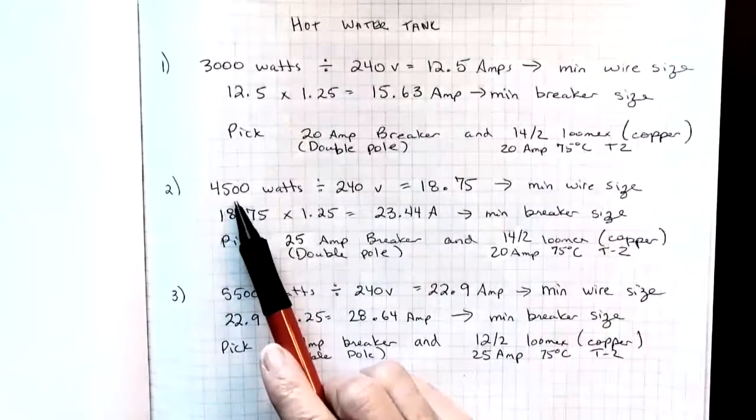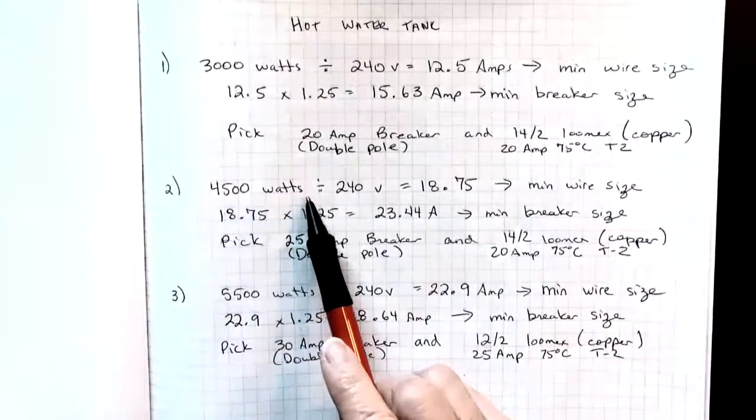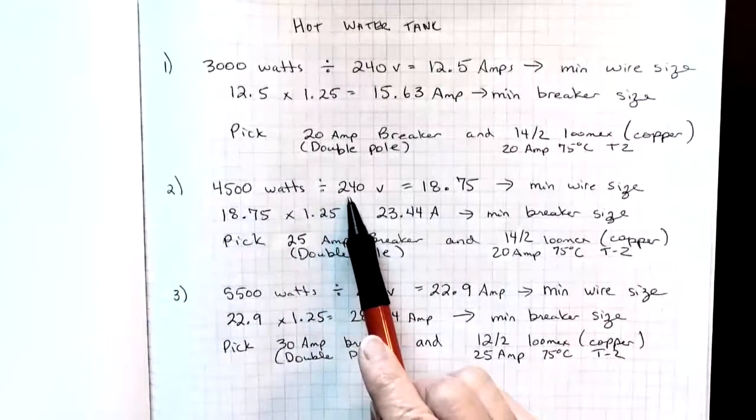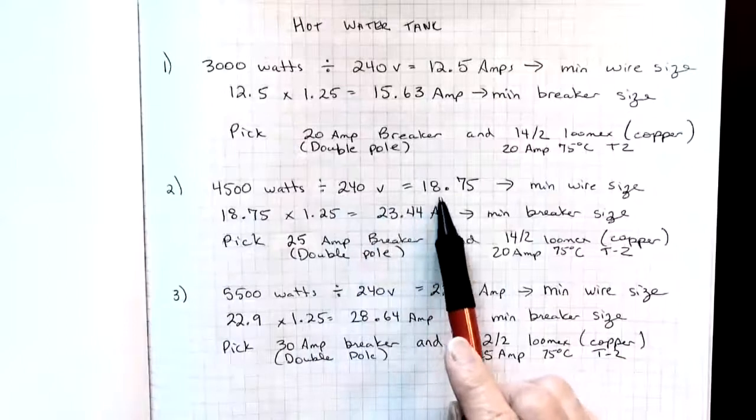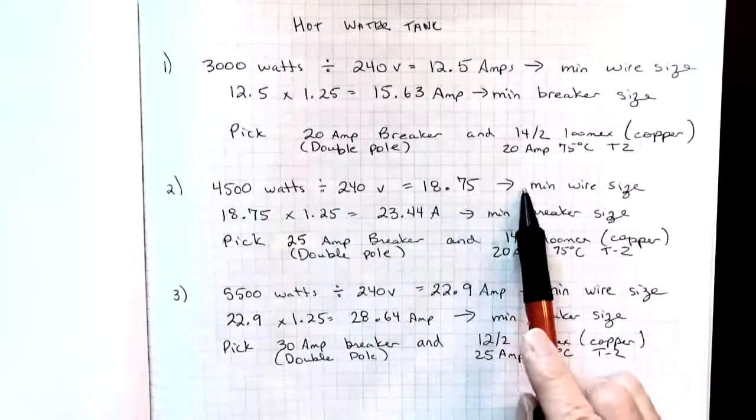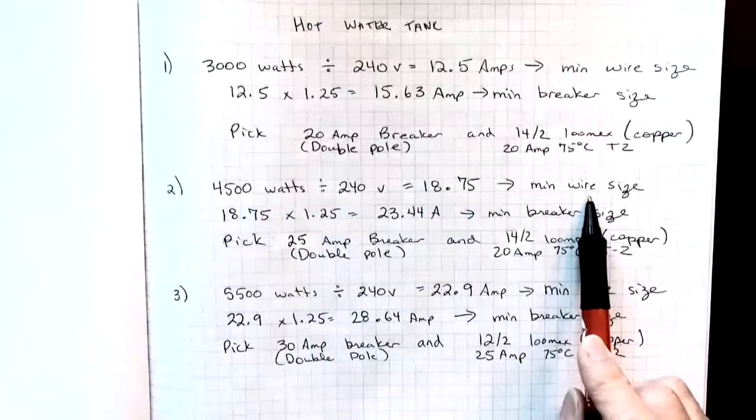Example number two is a 4500 watt hot water tank divided again by 240 volts. It gives us 18.75. That will be the minimum ampacity of our wire size.